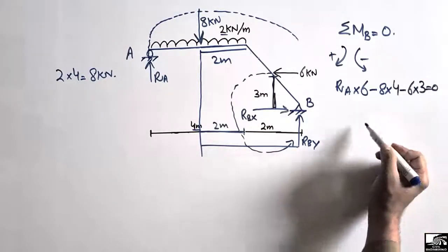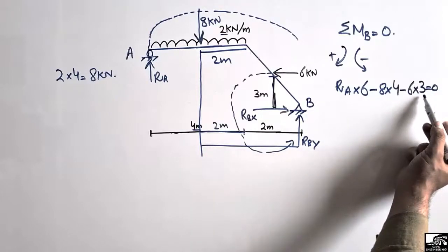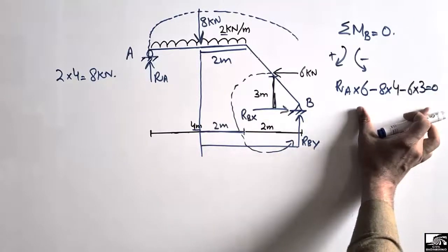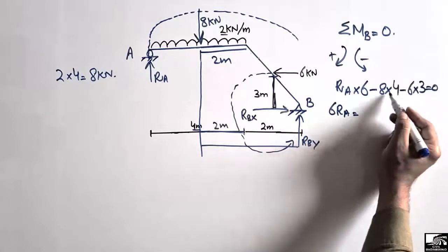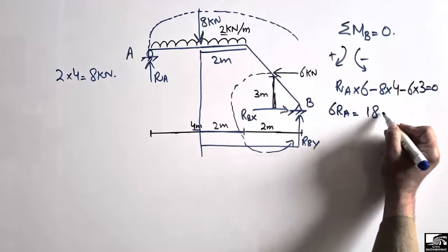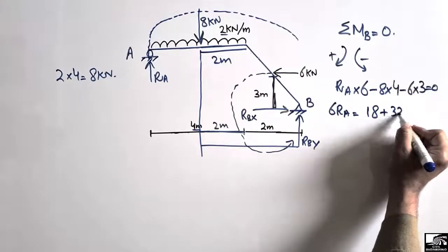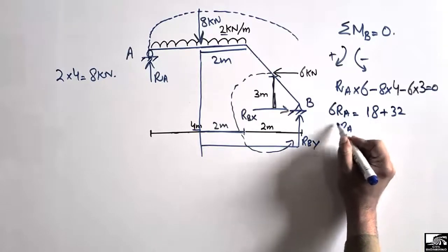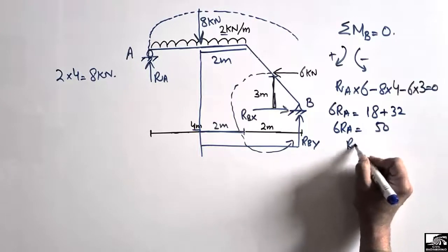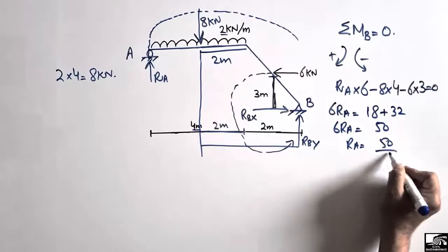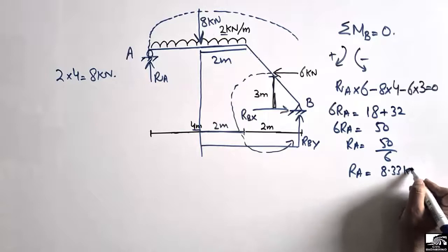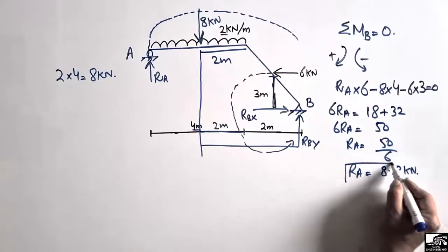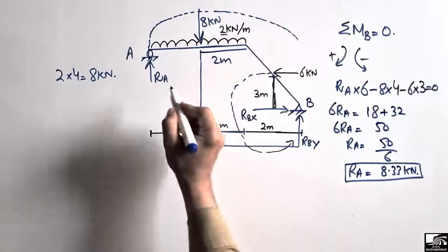Setting the summation of all moments about point B equal to zero: 6·RA minus 32 minus 18 equals zero. Shifting the terms, we get 6·RA equals 50, so RA equals 50 divided by 6, which comes out to be 8.33 kilonewton. The support reaction at point A is 8.33 kilonewton.